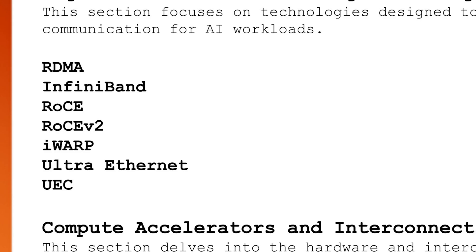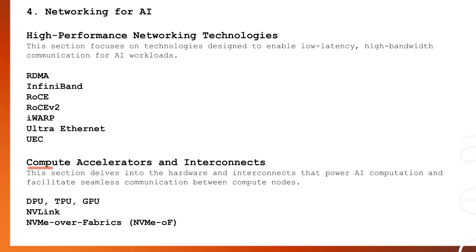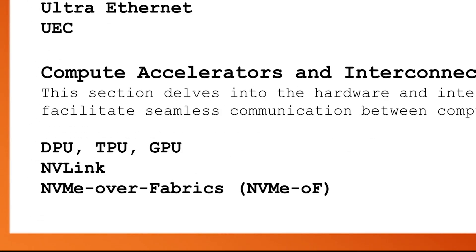Next I will go through compute accelerators and interconnect technologies. AI computation relies heavily on specialized hardware, so I will cover DPUs, TPUs, GPUs, FPGAs, and so on. We will also look at interconnect technologies like NVLink and NVMe over Fabrics, which help achieve low latency and high bandwidth between nodes — between GPUs, TPUs, and other accelerators.